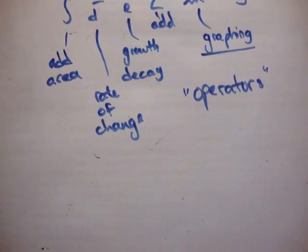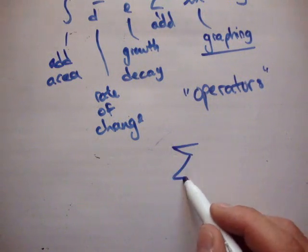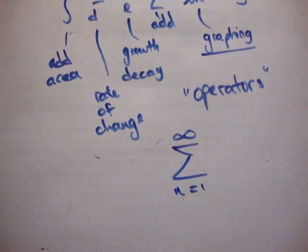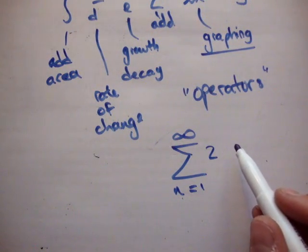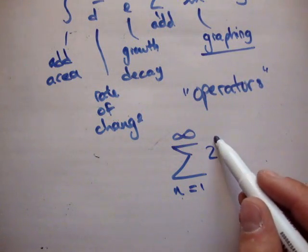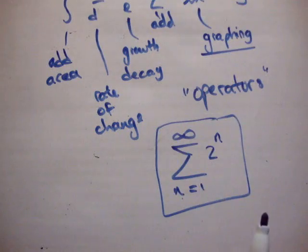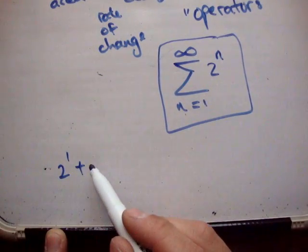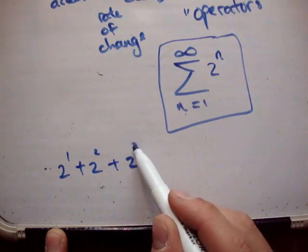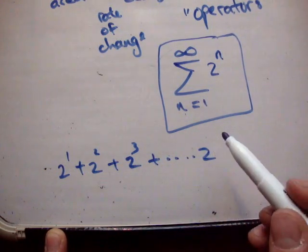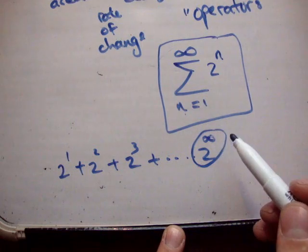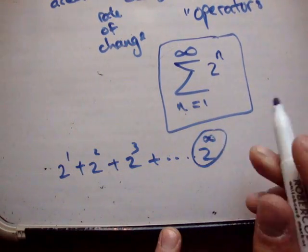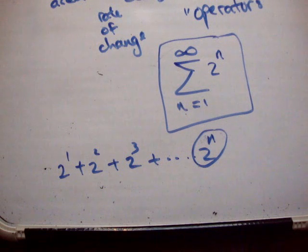Finally, one that you may see regularly: someone might write the sum from n=1 to infinity of 2 to the n. That sum would go: 2 to the 1, plus 2 to the 2, plus 2 to the 3, and so on. Now, you can't actually go to infinity, so this really means that the number will get bigger and bigger and bigger — so in practice, that's a diverging sum.